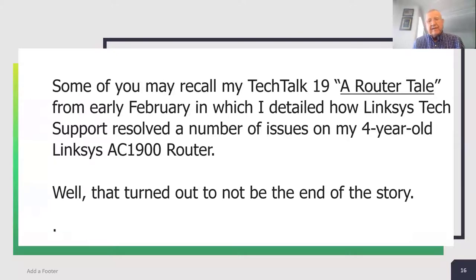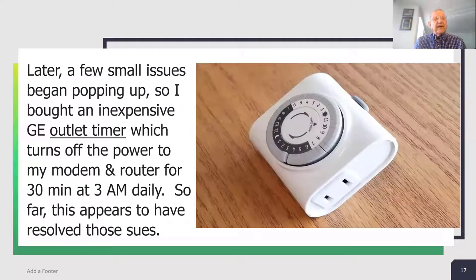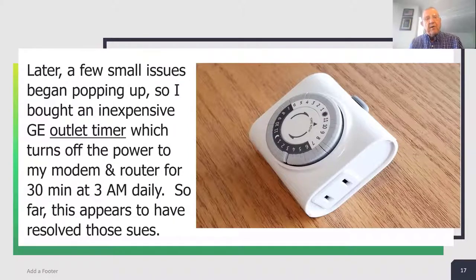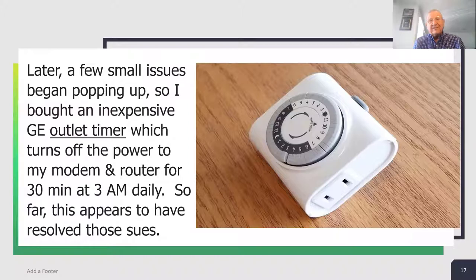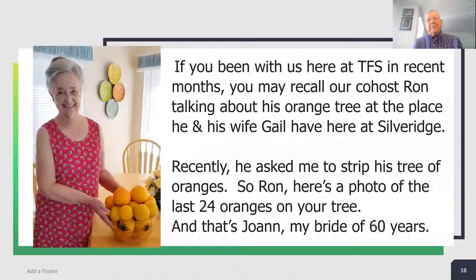Well, that turned out not to be the end of the story — later a few small issues began popping up. So I bought an inexpensive GE outlet timer which turns off the power to my modem and router for 30 minutes at 3 a.m. daily. So far — I've had it a week — it appears to resolve the issues I was having. It's a pretty good fix; most techies will agree.